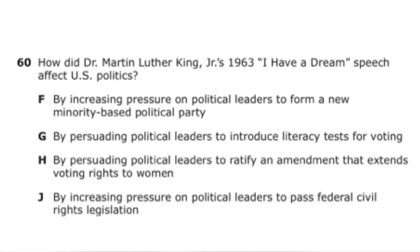The next question asks: how did Dr. Martin Luther King Jr.'s 1963 speech, 'I Have a Dream,' affect United States politics? The correct answer is J — by increasing pressure on political leaders to pass federal civil rights legislation. This question is pretty self-explanatory and doesn't need much further explanation. That wraps up today's video — I'll see you next time.